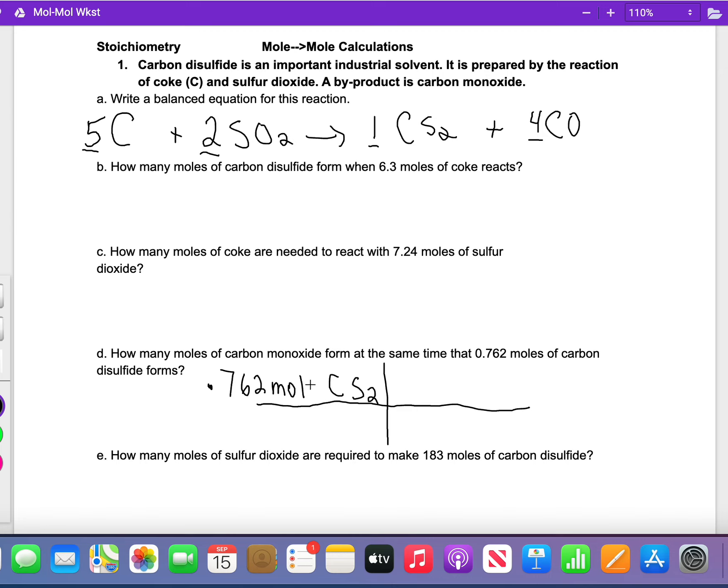In this unit you're always going to do three things. Number one: change to moles, but if it's already in moles you don't have to change it. Step 2: mole ratio from the balanced equation. That's what I'm going to do next.